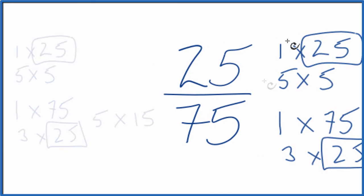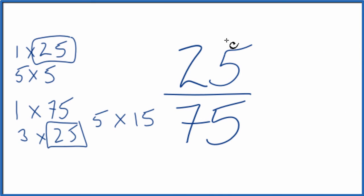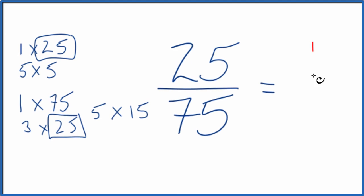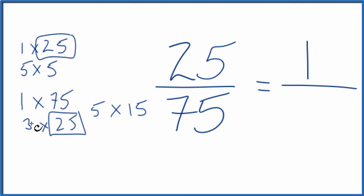Let's move these over here. So 25 divided by 25, that gives us 1, and then 75 divided by 25, that gives us 3. So we've simplified 25/75 down to 1/3.